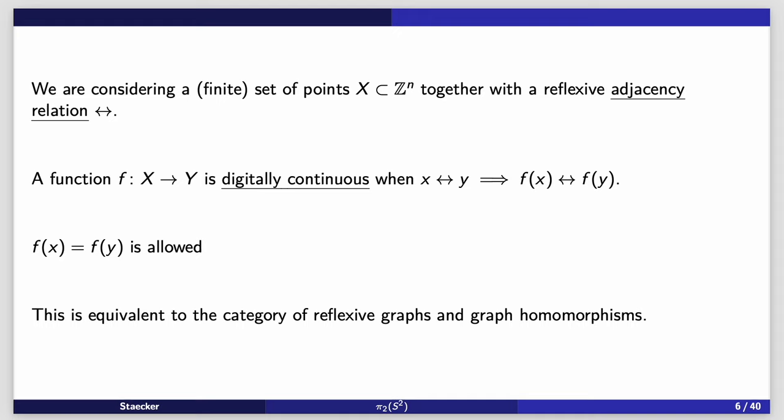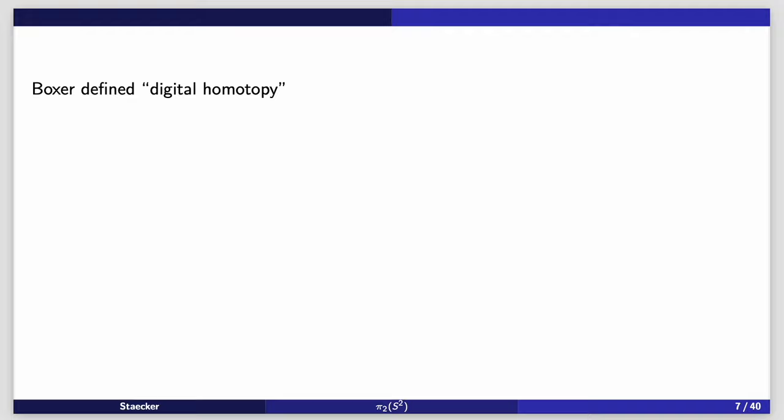This is equivalent to the category of reflexive graphs and graphomorphisms. Boxer also defined what we call digital homotopy, which is kind of what you think it ought to be. It's a map like this, where IN is the discrete interval of N points or maybe N plus 1 points. It doesn't matter. And it's continuous separately in each variable. This is using the box product for that product operation. You might call this the box homotopy. This is how Boxer always did it.